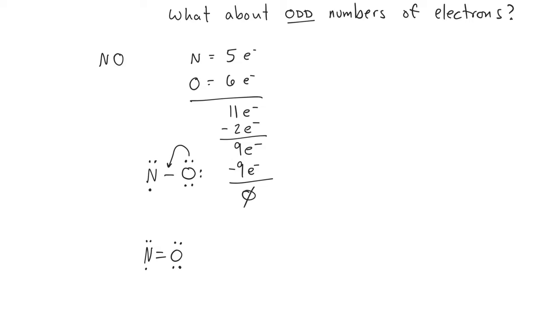So in this case, nitrogen does not have an octet, can't have an octet, oxygen has an octet, and so this molecule is now finished.